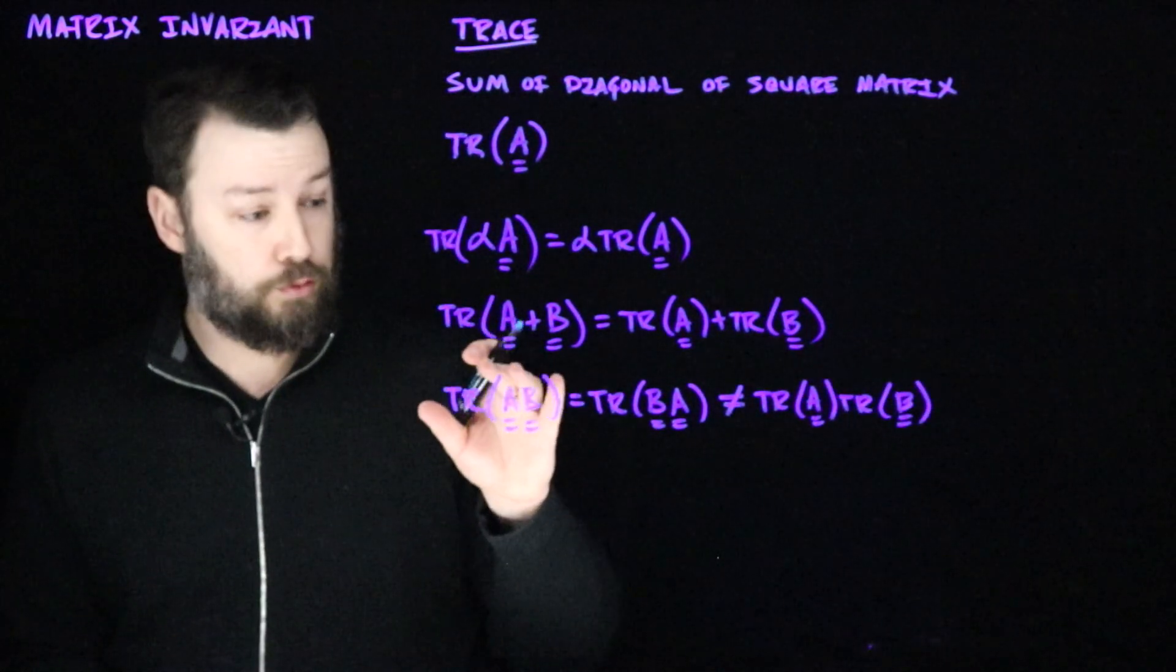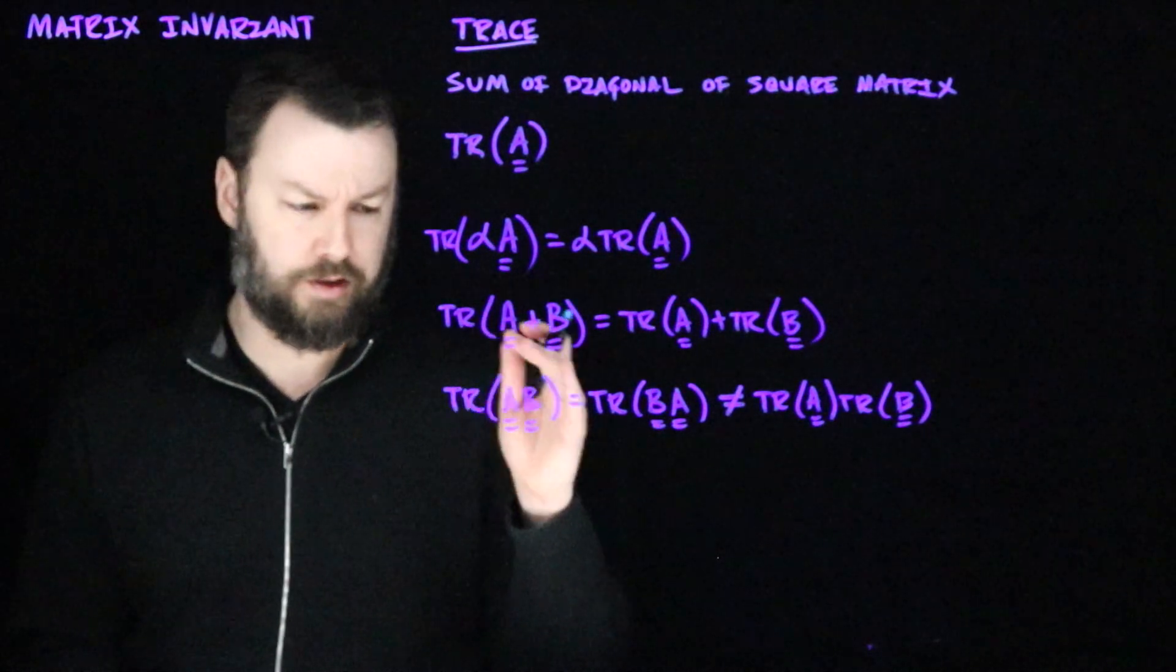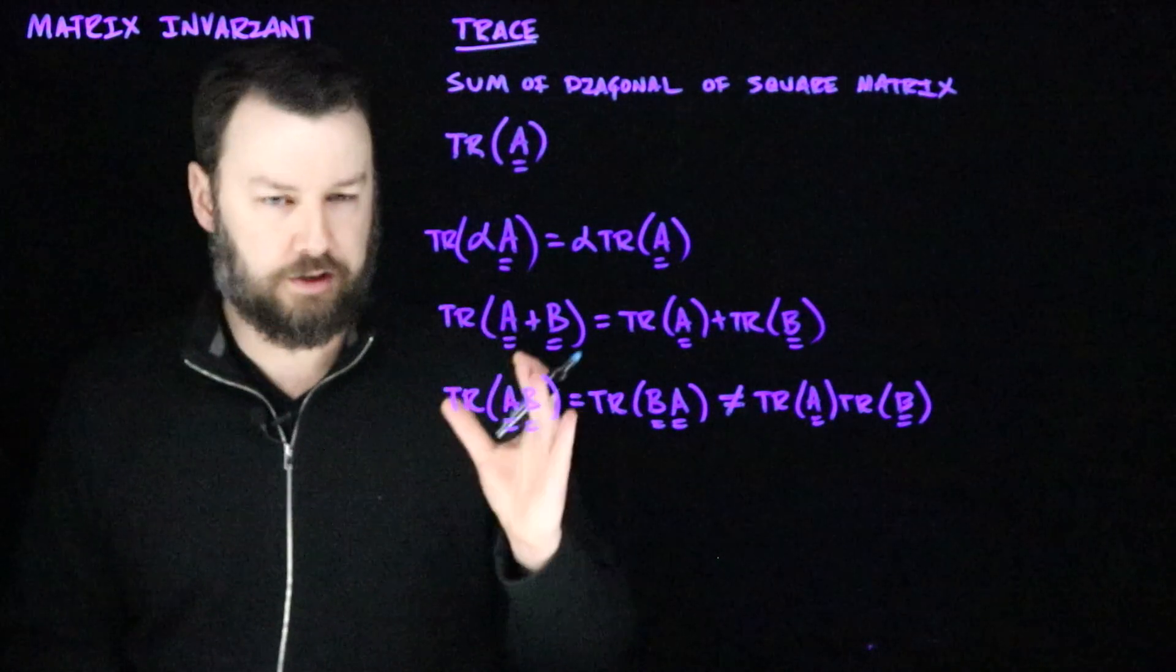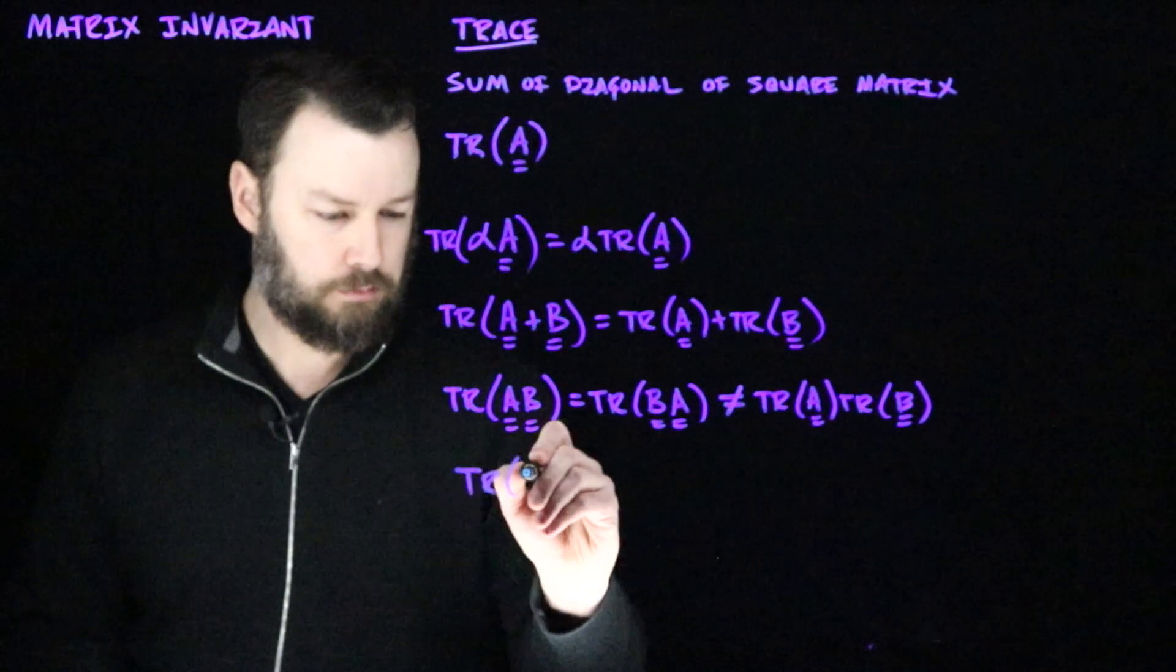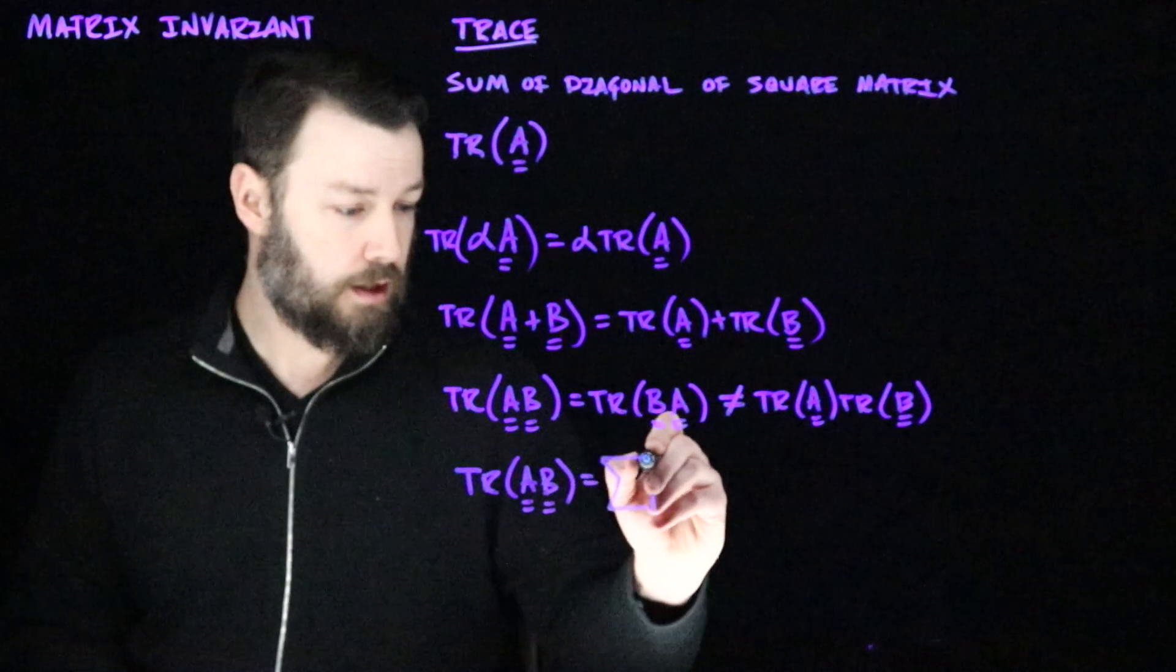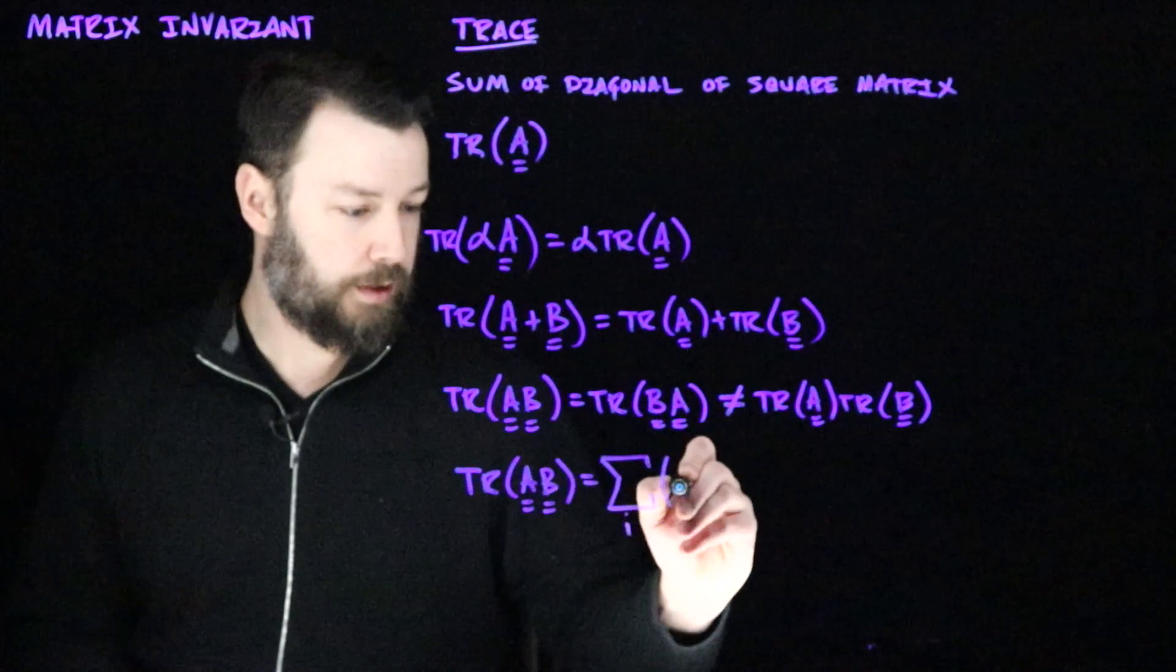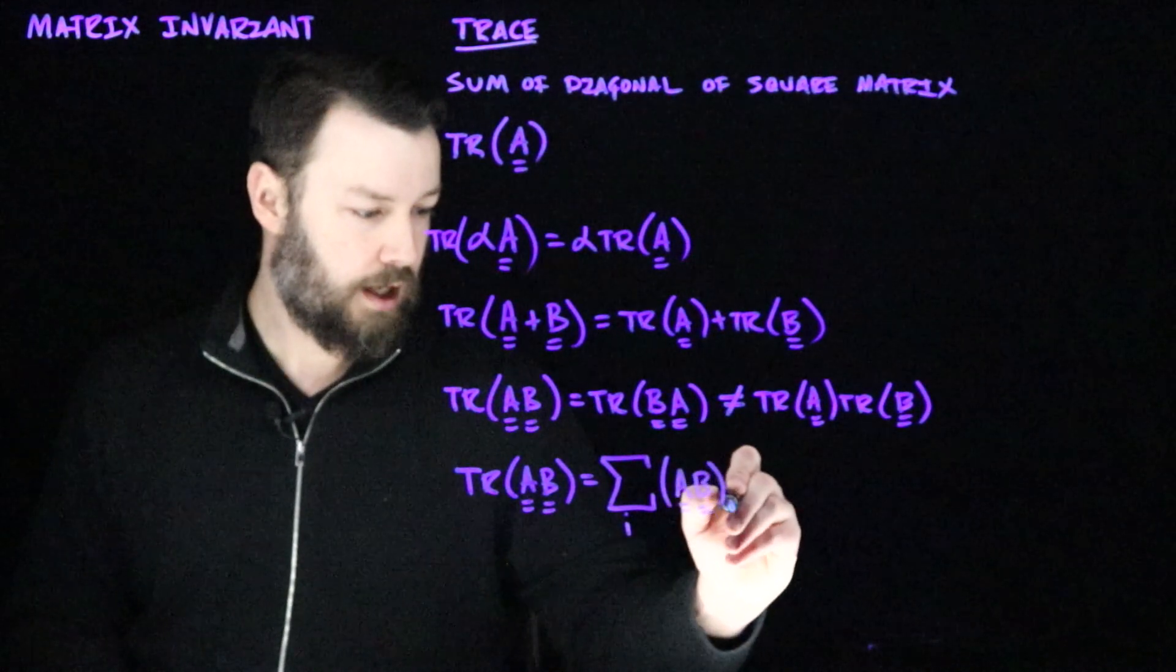Now this rule about commutativity is really important, so let's just take a minute to convince ourselves that this is true. So let's write out as a summation the trace of A multiplied by B, just to take a look. This is a sum over the diagonal elements I of the matrix AB, I, I.